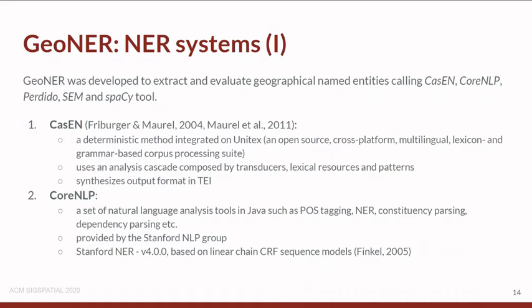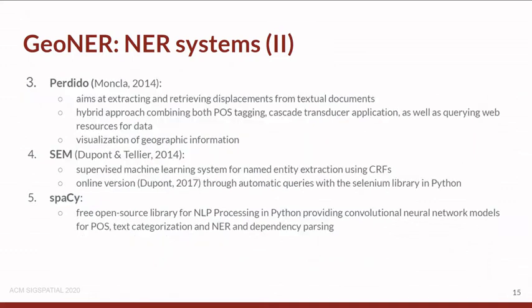CoreNLP is a set of natural language processing tools in Java, including part-of-speech tagging, named entity recognition, dependency parsing, and more. We use Stanford NER version 4, which is based on linear chain conditional random field sequence models. PeridDo is a hybrid approach combining part-of-speech tagging, cascade transducer application, as well as querying web resources for data. It also provides the possibility to visualize geographic information and aims to extract and retrieve displacements from textual documents.